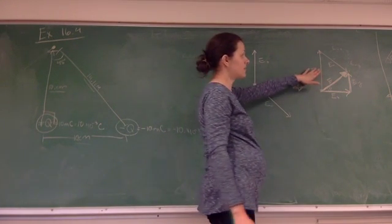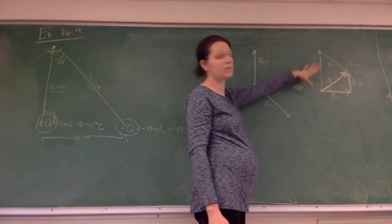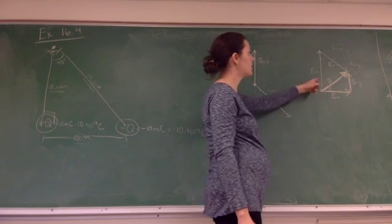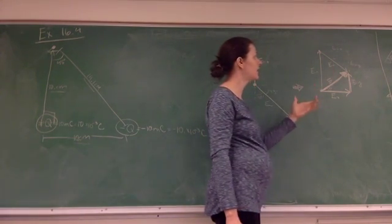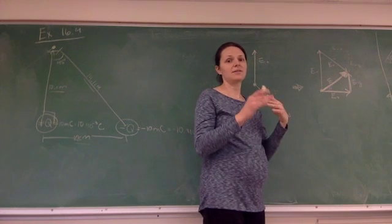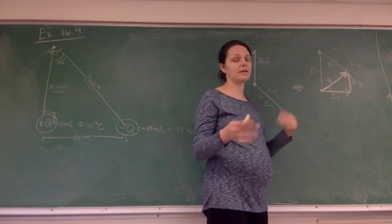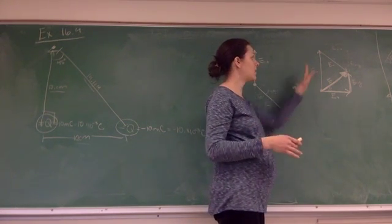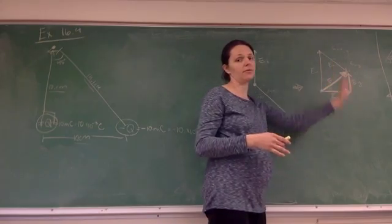So, but if you had three vectors, the same things would apply, right? So here we only have two vectors, but if you added a third vector, you know, it's again splitting the things that have X and Y components into their X and Y components and adding all of the X things separately from all of the Y.